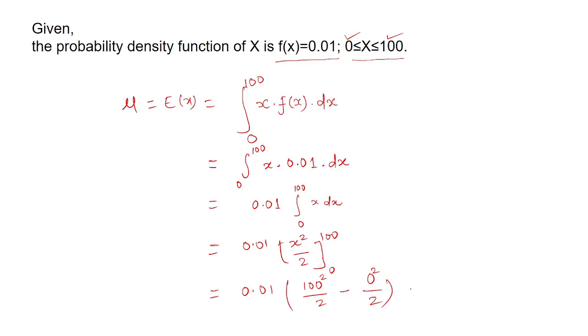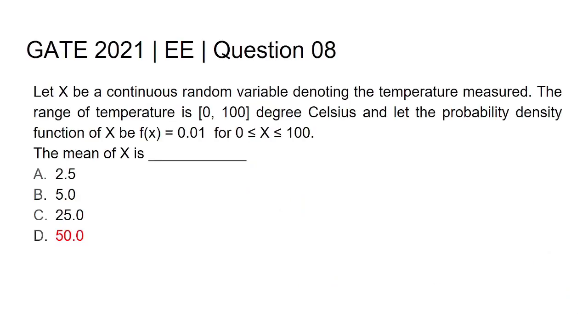It will be equal to 0.01 times x squared by 2, evaluated from 0 to 100. After simplifying, it will be equal to 100 by 2. After dividing 100 by 2, 50 will come, so 50 is the right answer.